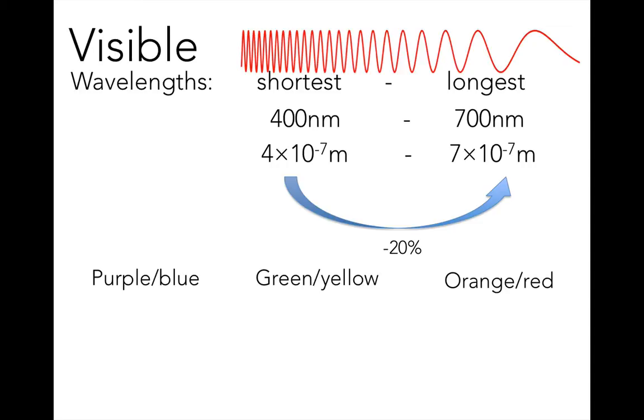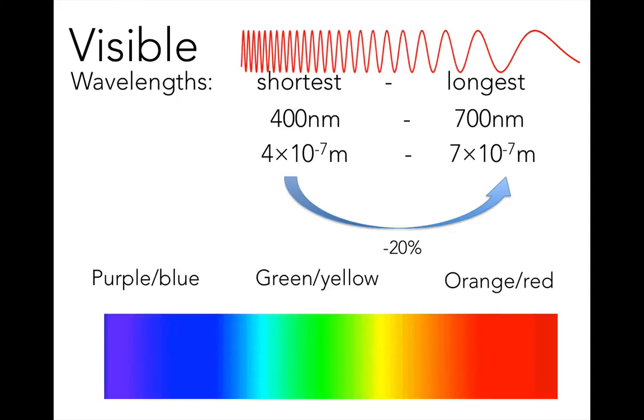Remember the colors of the rainbow from elementary school? Red, orange, yellow, green, blue, indigo, violet, or ROY-GBIV. That order is in decreasing wavelength. Red light has the longest wavelength, and violet light has the shortest wavelength. This is what I meant when I said that we as humans perceive wavelengths in the visible regime as color. For visible light, wavelength translates directly to color.